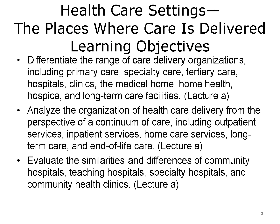The objectives for this unit, Health Care Settings — the Places Where Care is Delivered — are to differentiate the range of care delivery organizations, including primary care, specialty care, tertiary care, hospitals, clinics, the medical home, home health, hospice, and long-term care facilities.